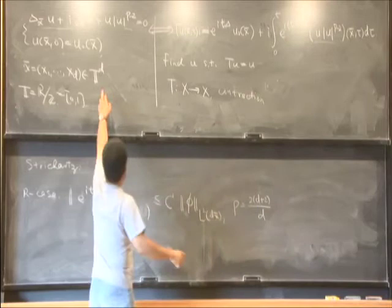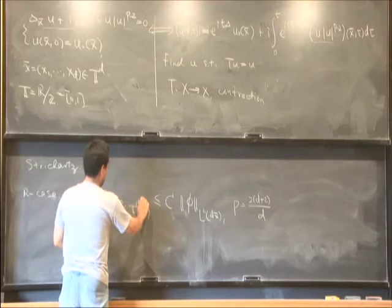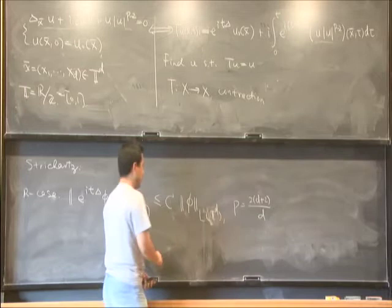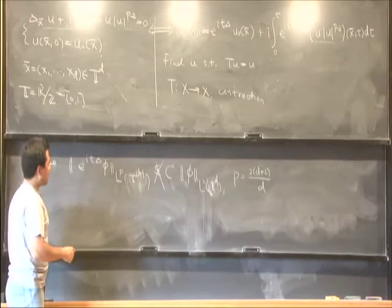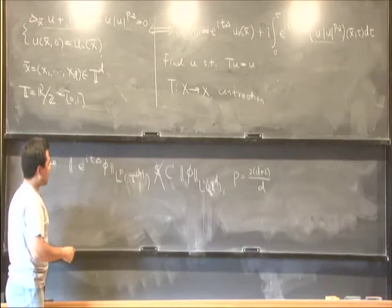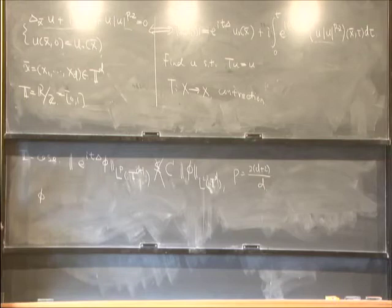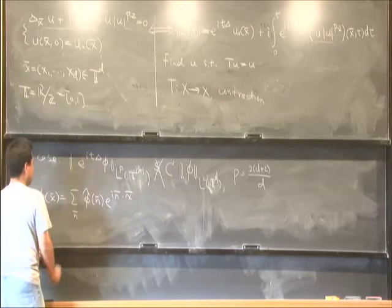But unfortunately, if we simply modify the R case to the T case, this claim is false. In order to see this, we can explain it this way. We can always expand φ into some Fourier series.